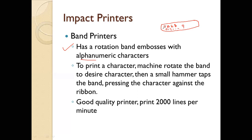The printer rotates the band. The Band Printer's main printing source or component is the band, and on its surface, all alphanumeric characters are placed. To print a character, for example if a printer has to print a character, the machine rotates the band to the desired character position. In front is the ribbon, and behind it is the paper.